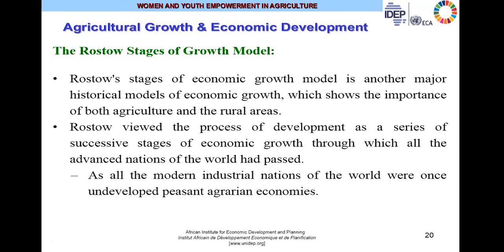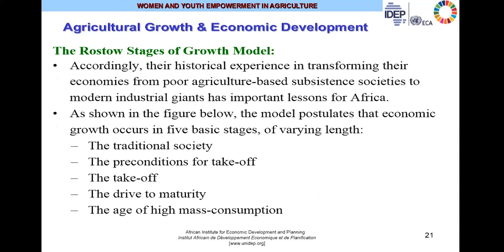We also have Rostow's stages of growth model — another major historical model of economic growth which shows the importance of both agriculture and rural areas. Rostow viewed the process of development as a series of successful stages of economic growth through which all advanced nations of the world have passed. All modern industrial nations were once underdeveloped peasant agrarian economies, like you have today in Africa. According to Rostow, rich countries of the United States, Europe, Australia, Canada, and Japan were at one time in their economic history having the same conditions as we have today in Africa.